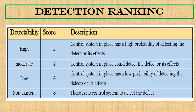Next is detection ranking. The detection control system is ranked in four classes: high, moderate, low, or non-existent. If a control system is in place and has a high probability of detecting the defect or its effects, it is ranked as high. If the control system is in place and could detect the defects or its effects, it is classified as moderate. If it has a low probability of detecting the defects, it is categorized as low. If no control system exists to detect the defect, it is categorized as non-existent. Scores are assigned as 2, 4, 6, and 8 accordingly.